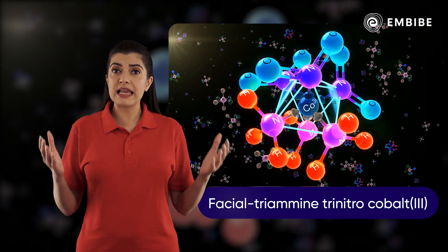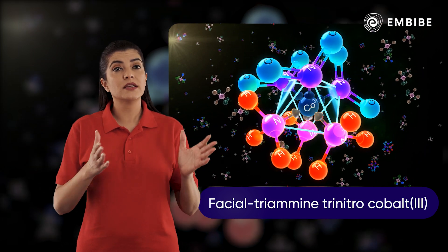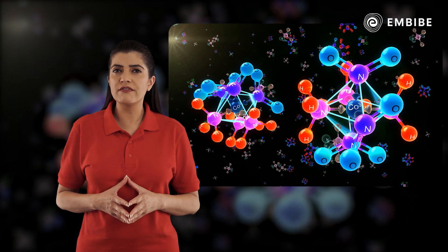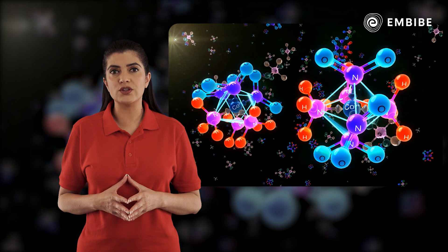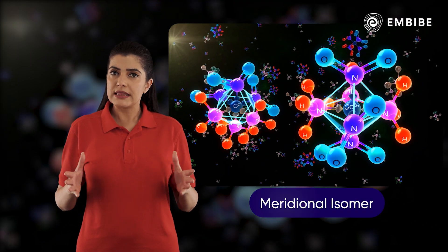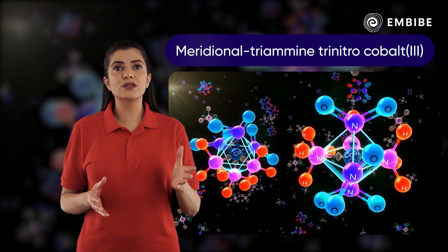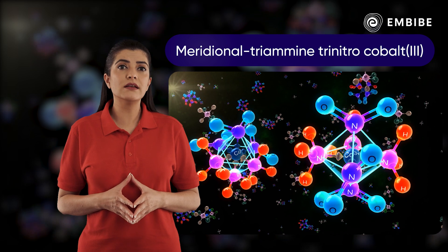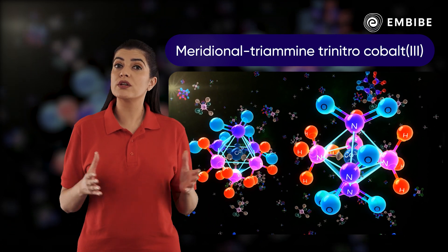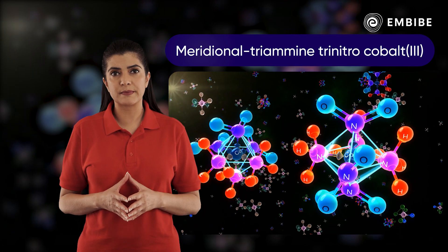If in the same complex three ligands are not in one face of the octahedron, a meridional isomer results. This complex is called meridional triaminetrinitrocobalt(3) ion.